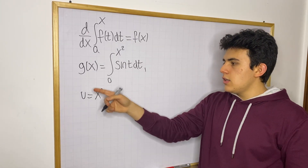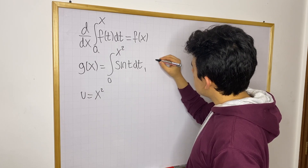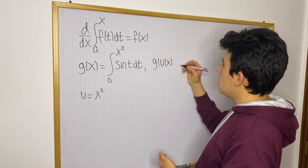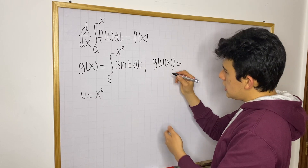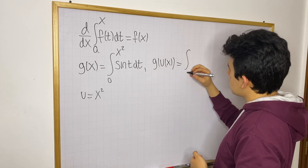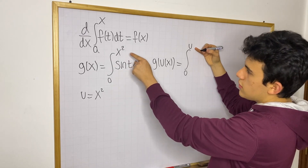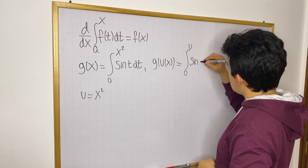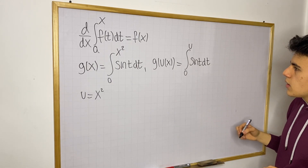So we define a new variable u, letting u equal x². Now I'll rewrite g in terms of u. So g of u, where u is a function of x, is going to be the integral from 0 up to u — because u equals x² — of sine(t) dt. The inner integrand stays the same.